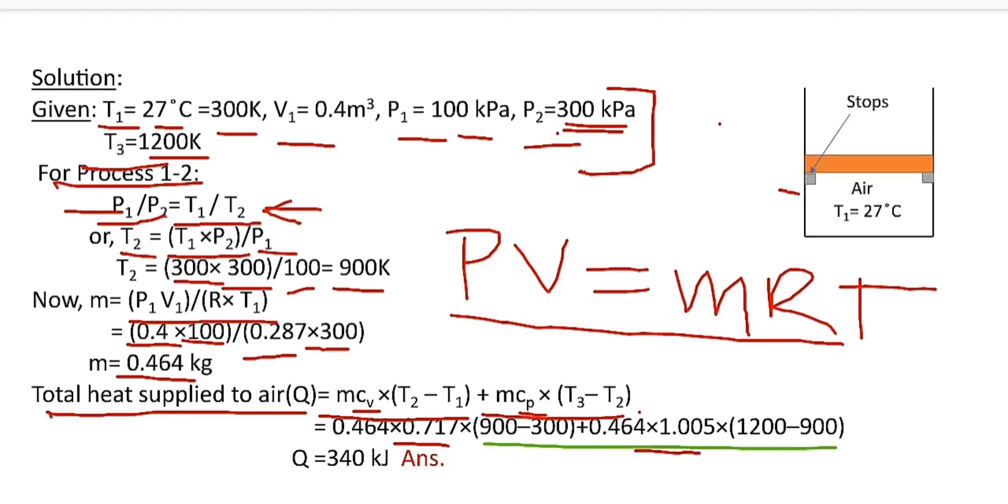After putting these unknown values here, we are getting total heat supplied to the air, and it is equal to 340 kJ.